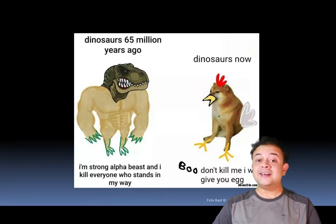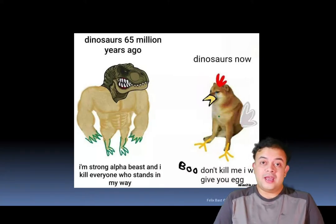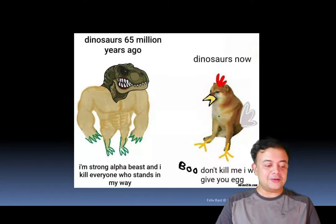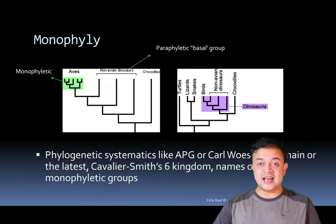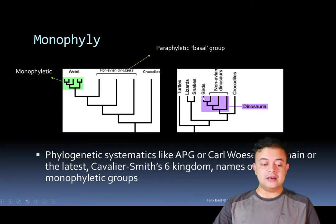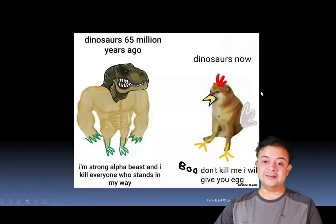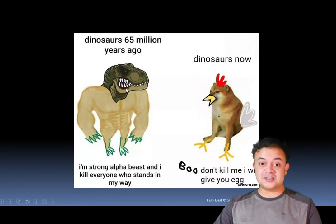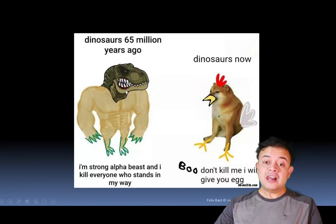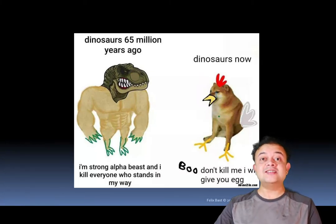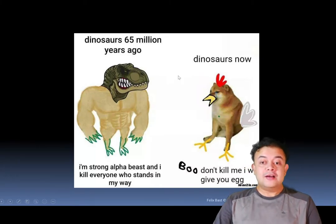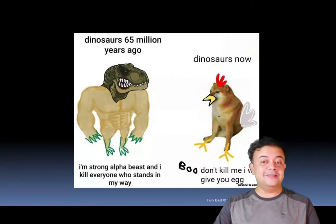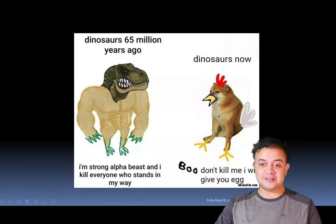There's a humorous internet meme: in strict sense, a chicken is a kind of dinosaur, since Dinosauria includes non-avian dinosaurs plus birds. The meme shows an aggressive dinosaur from 65 million years ago saying it can kill anyone, while the chicken replies it will give an egg instead.